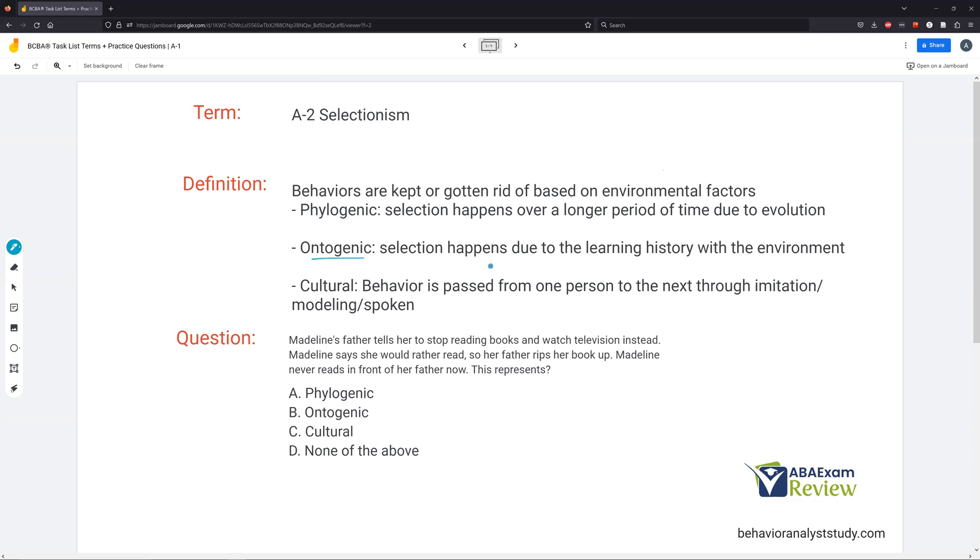Ontogenic is more what we work in. Selection happens due to learning history with the environment. So if I deliver reinforcement, learning history is going to lead to an increase in that behavior in the future. Same with extinction or punishment. So ontogenic is much more short term. It happens much more rapidly and happens much more often. Ontogenic is what we're going to primarily be dealing with as we go through our behavior change procedures. We're going to be working with the learning history of our clients. Now cultural is very similar to ontogenic. Behaviors are selected and passed from one person to the next through imitation, modeling, or spoken word. What selectionism is saying is behaviors are chosen based on environmental factors and the way they interact with the environment.